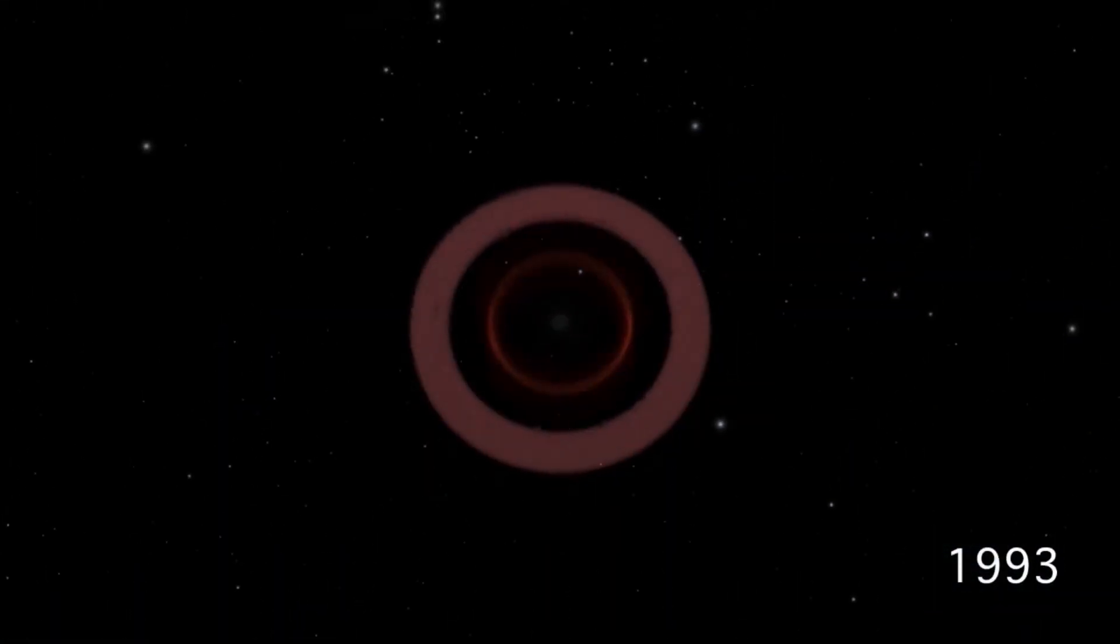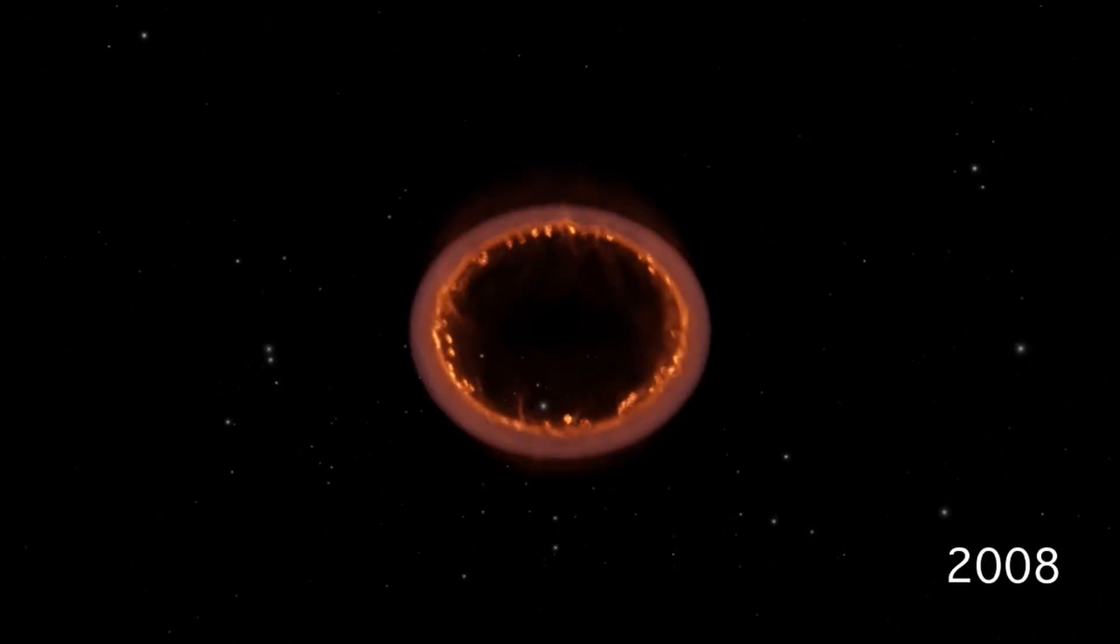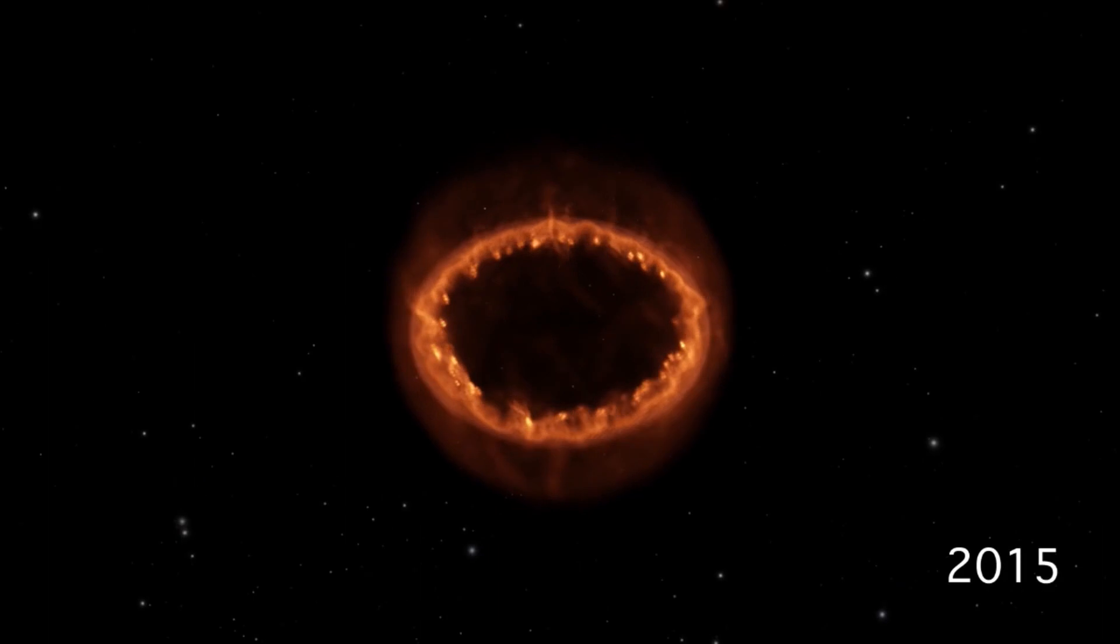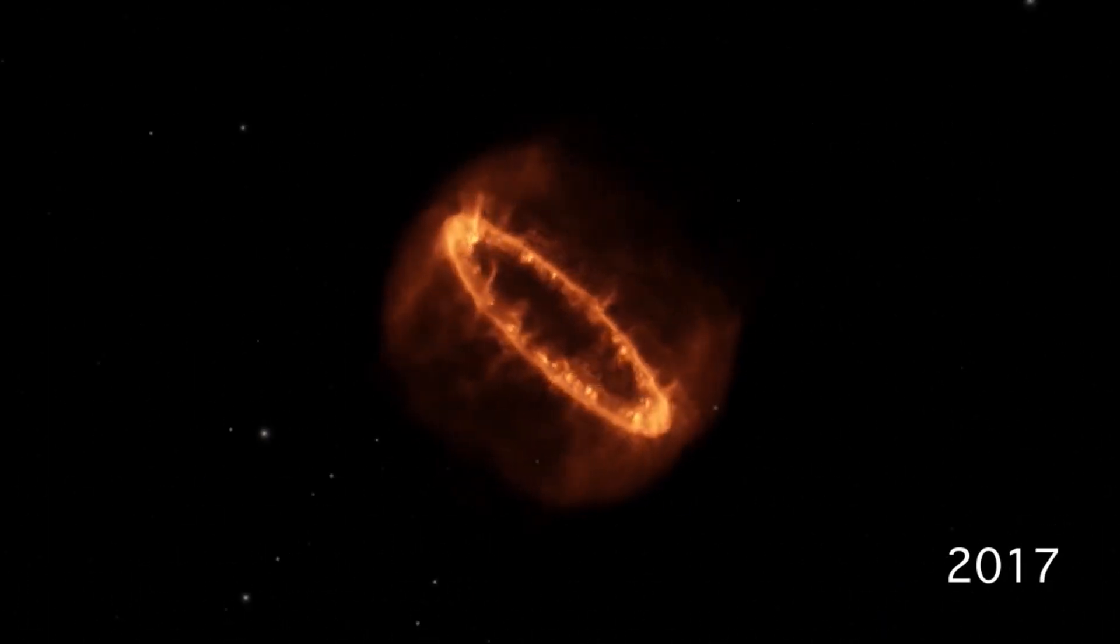In February 1987, light from an exploding star arrived at Earth after traveling across 160,000 light-years of space. It was the first supernova visible to the naked eye in more than 400 years.